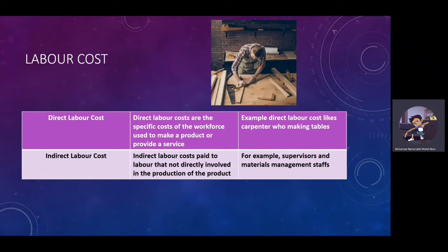For Labor Costs, they also have two: Direct Labor Costs and Indirect Labor Costs. Direct Labor Costs are the specific costs of the workforce used to make a product or provide a service — for example, a worker who makes tables. Indirect Labor Costs are paid to labor that are not directly involved in the production of the product, for example like supervisors and materials management staff.